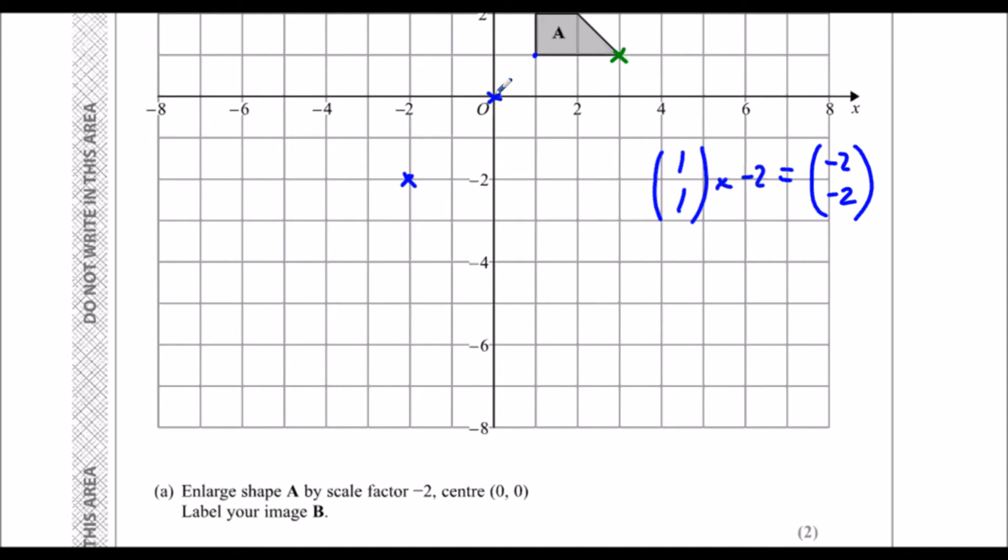How about this point? So from the center, from the origin, it's along 3, up 1. If I times that by minus 2, 3 times minus 2 is minus 6, 1 times minus 2 is minus 2. So that's back 6, down 2. So that green point has now moved to over here.